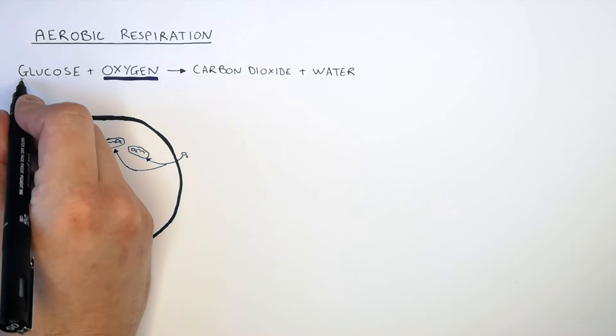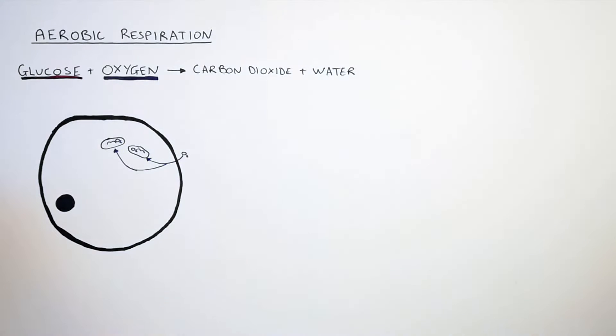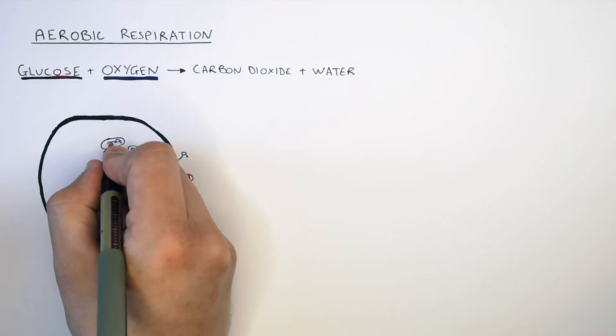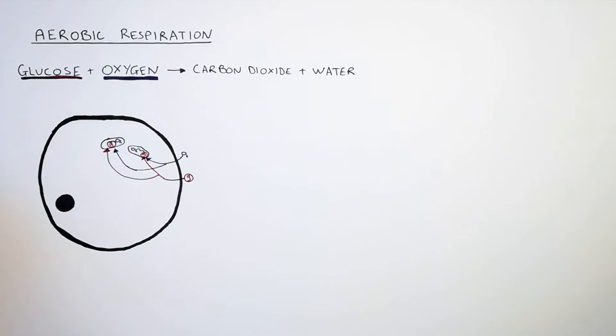The glucose that we require for respiration comes from the food we eat. When we eat carbohydrates such as starch, that gets broken down to glucose. That glucose will then diffuse into our cells. In the organelle called the mitochondria, oxygen and glucose are going to react together.